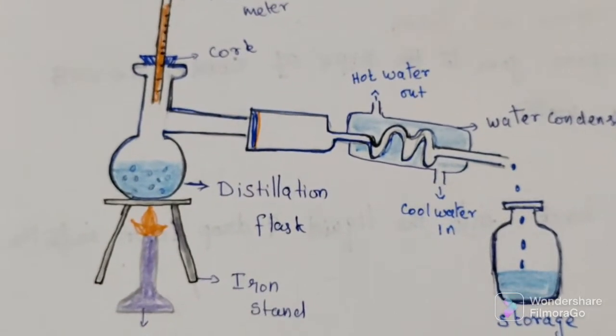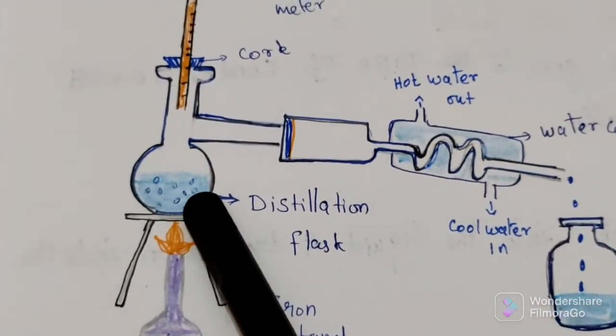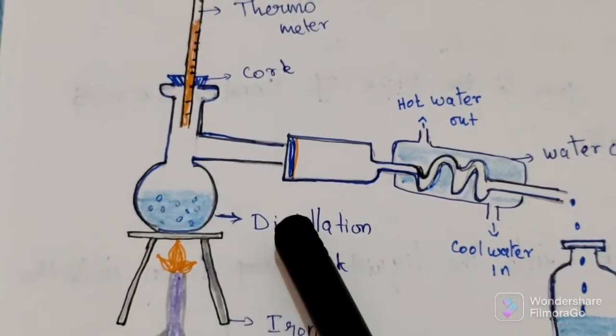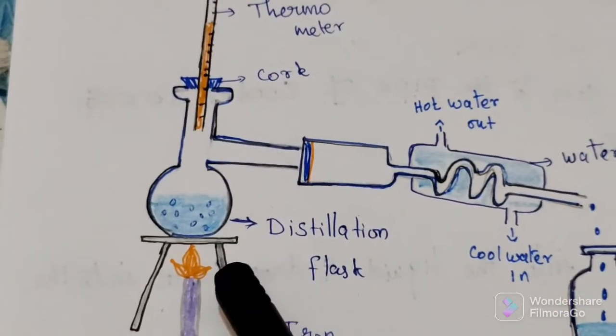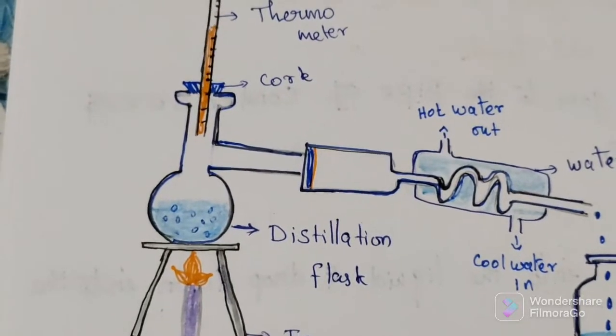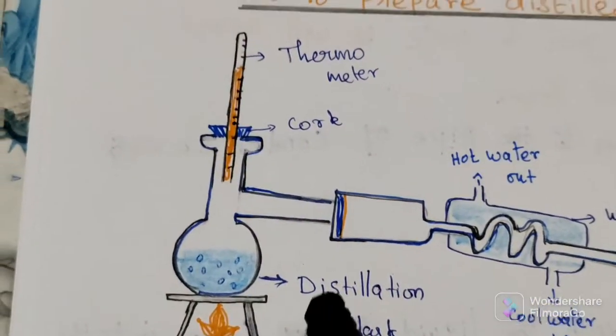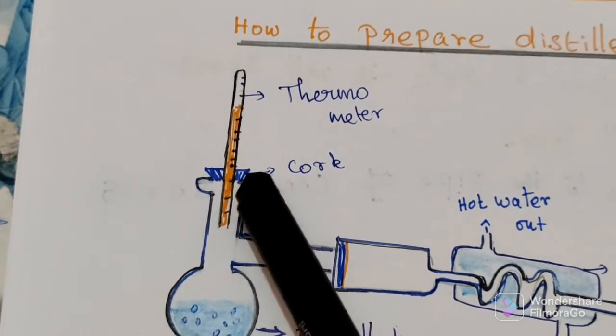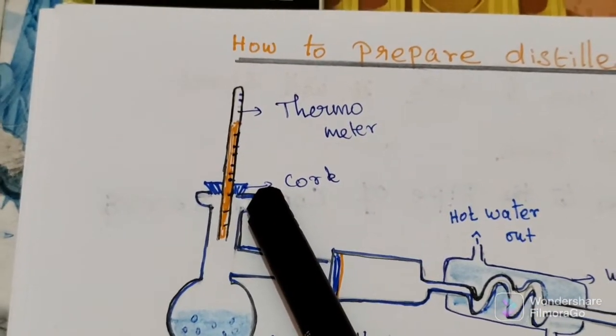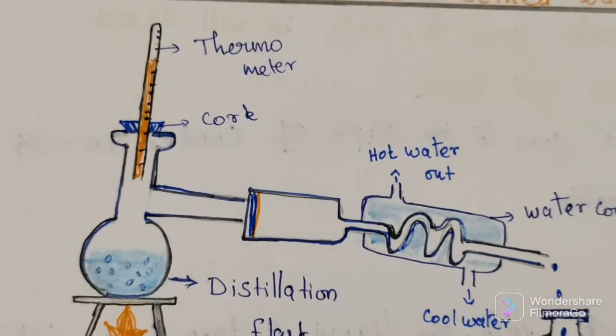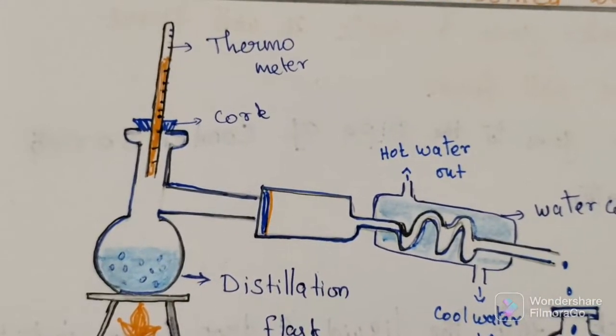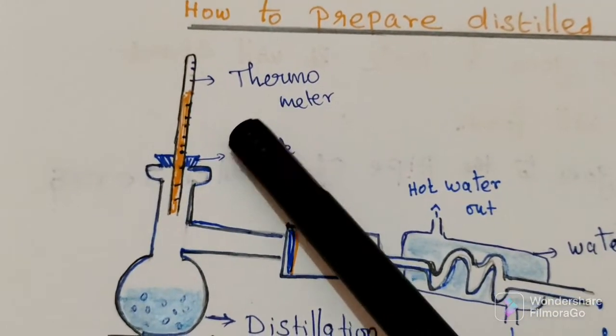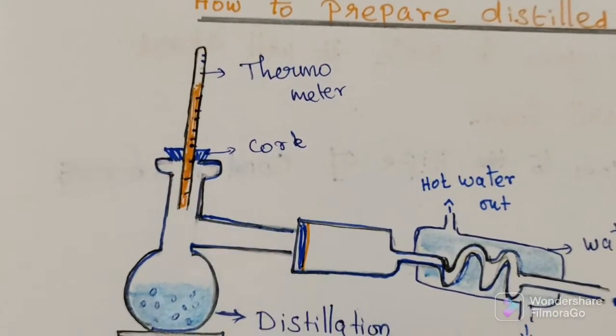First we will take one distillation flask, then in this one we are adding water, then this flask we put into that stand. After that, close that upper opening with the help of cork. Adjust thermometer in the cork to measure temperature. Here we will insert thermometer to check the temperature.